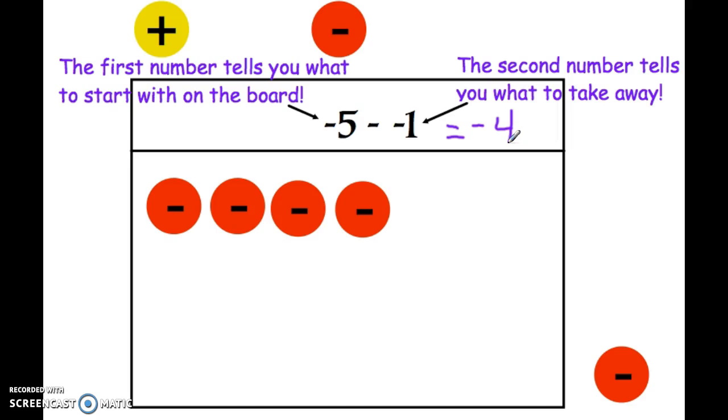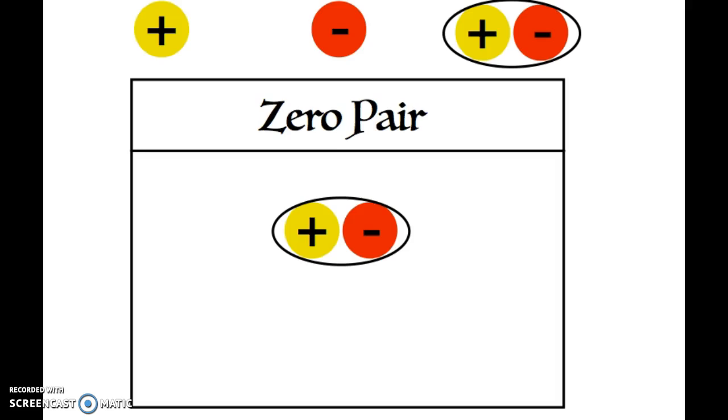This is my favorite type of problem to use subtraction with when you have a negative number and you're subtracting a smaller negative number. The next type of problems though, we're going to have to go back to that idea of a zero pair. Remember a positive and negative together make zero.